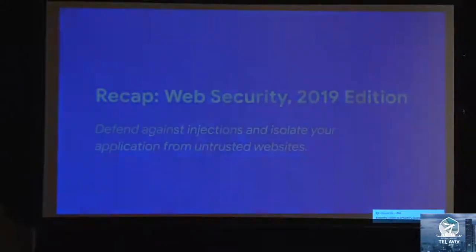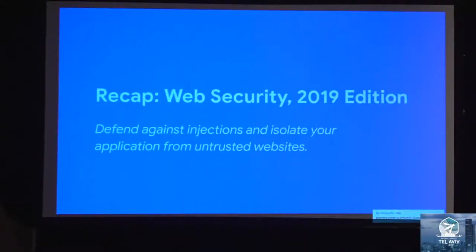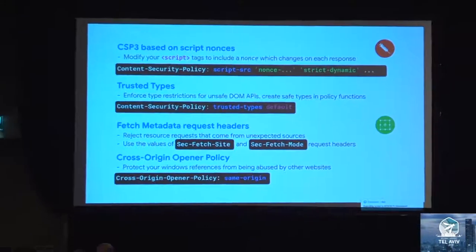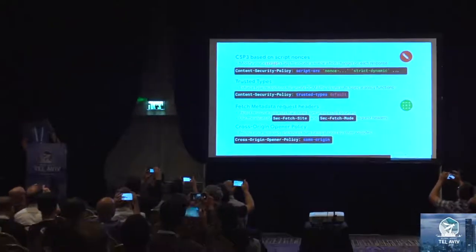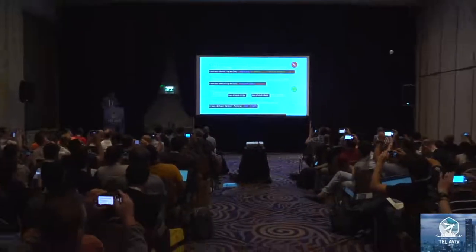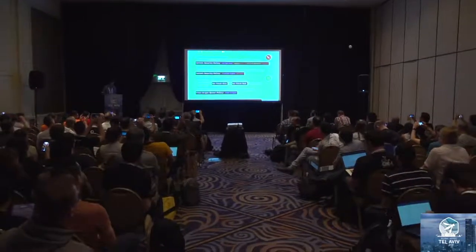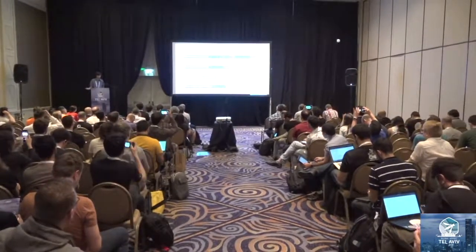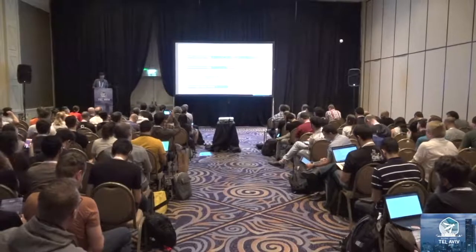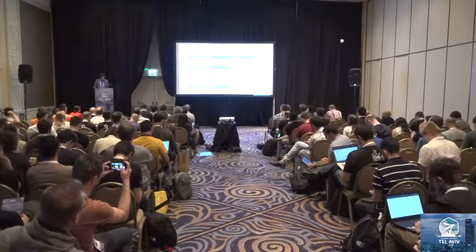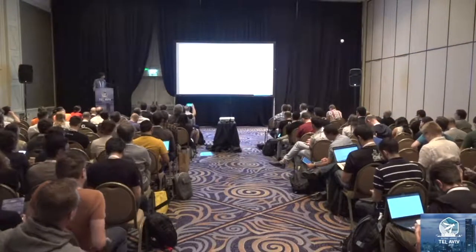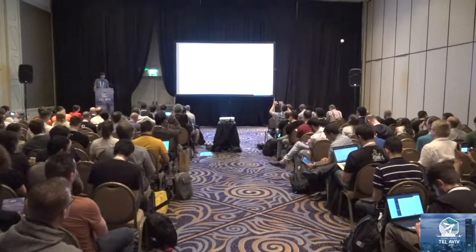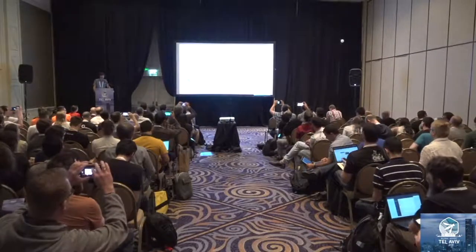With that I'll wrap up. You can now take a photo of this summary slide and pretend you know everything about these features. The TL;DR: use CSP with nonces for reflected and stored XSS, Trusted Types for DOM-based XSS, fetch metadata request headers to protect against isolation issues based on resource loads, and Cross-Origin Opener Policy to protect your window references from tampering. The slides are online and I've put links here in case you weren't able to note them down.